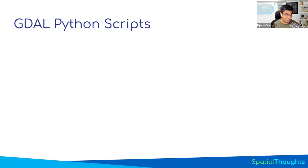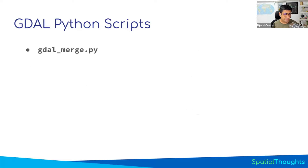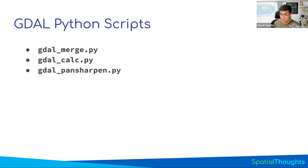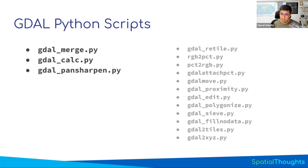GDAL Create just creates an empty dataset. The GDAL tools also come with a bunch of Python scripts that use Python to invoke the GDAL binaries. They use the GDAL bindings via Python and are quite helpful for a number of things: GDAL Merge to merge different datasets, GDALCalc for doing raster algebra (which we'll use extensively when working with satellite data), and PanSharpen to apply the pan sharpening algorithm.